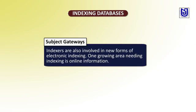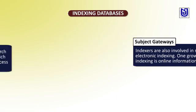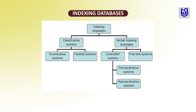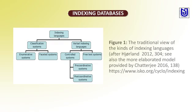Subject gateways: indexes are also involved in a new form of electronic indexing — a growing area involving indexing of online information. Website and metadata indexing: despite the proliferation of automated search engines, there are a number of ways in which human indexers are needed to enhance access to information on the worldwide web. Figure 1 shows the indexing of catalogue and classification systems, and the verbal indexing languages — including enumerative systems, faceted systems, controlled systems, free text systems, procedural systems, and definitional systems. This is a traditional view of kinds of indexing languages after Hartland, 2012.